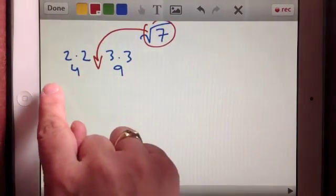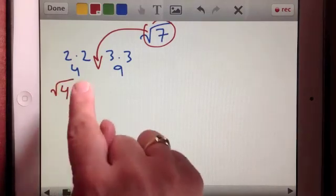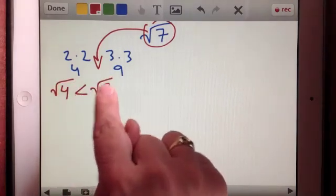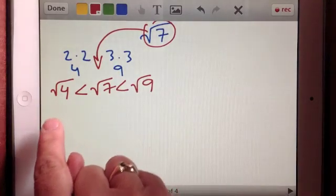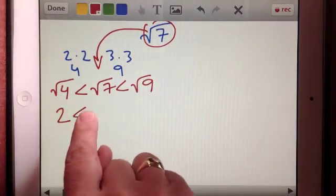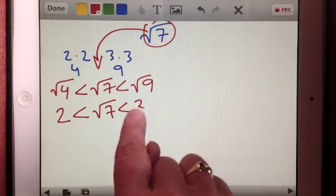So let me write that as a statement. Square root of 4 is less than square root of 7, which is less than square root of 9, which means that if I only look at the positive solutions, I have 2 is less than square root of 7, which is less than 3.